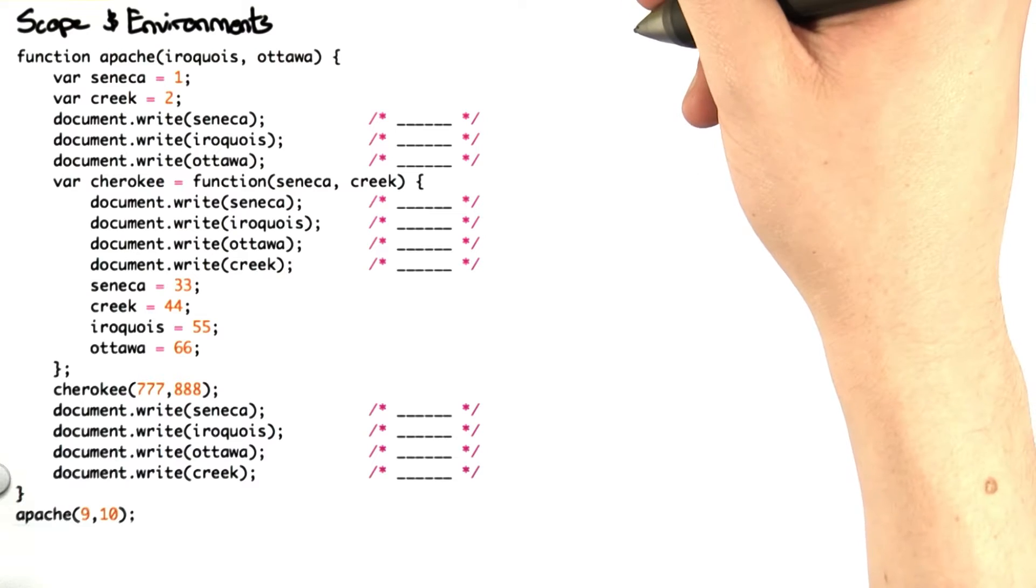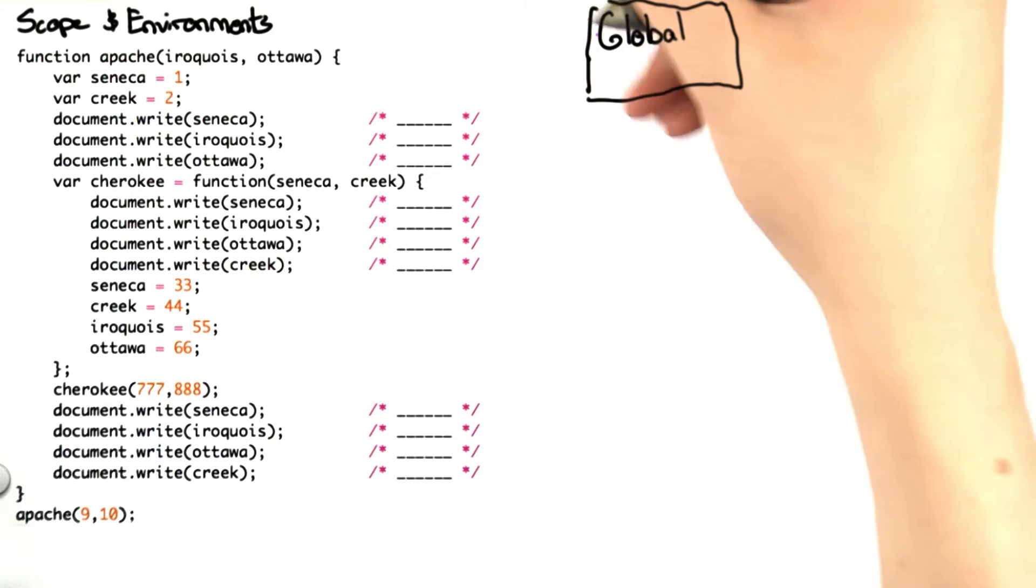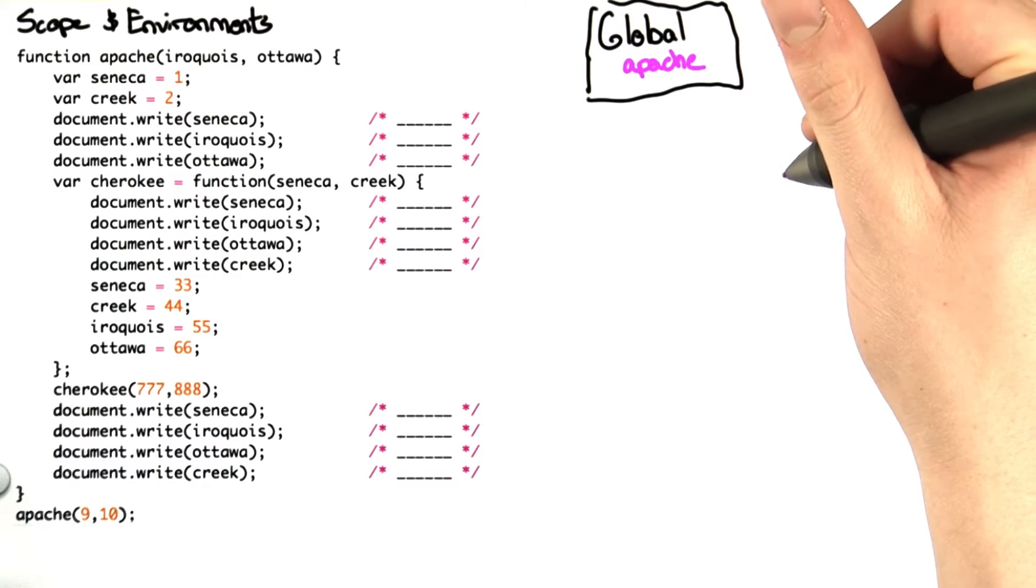So let's start with the global environment. In the global environment, we define a function Apache, and the first thing we do is call it with the inputs 9 and 10. So this is going to create a new environment for that function call of Apache.